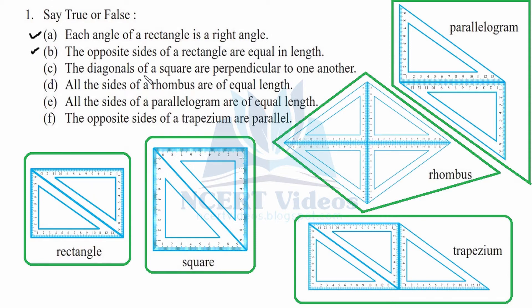Part C - diagonals of a square are perpendicular to one another. This is true. You can see here that a square is made up of two set squares having 45-45-90 degree measures. The diagonal is common, therefore they cut each other perpendicularly.